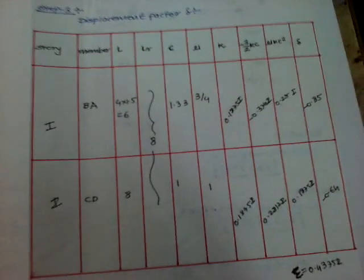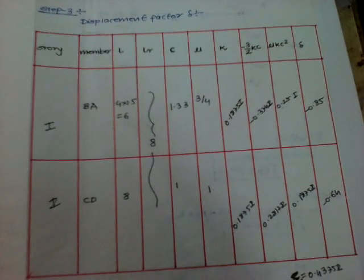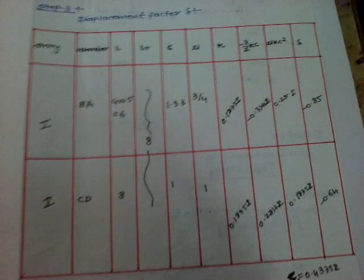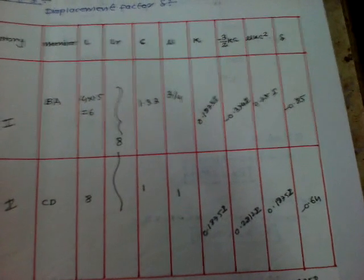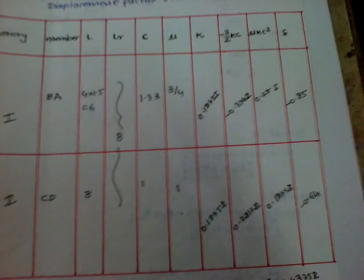K, K is the stiffness we are calculated. Then minus 3 by 2 K C, it is a calculation. Mu K C square, it is also calculation. And delta, delta is formed by the ratio of minus 3 by 2 K C upon summation of mu K C square.